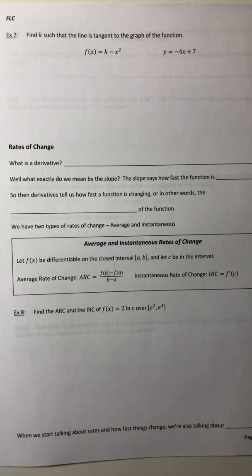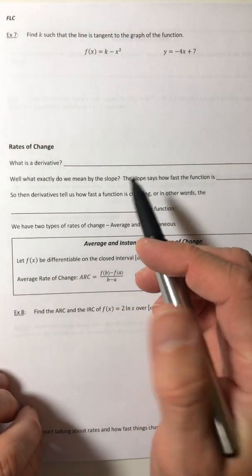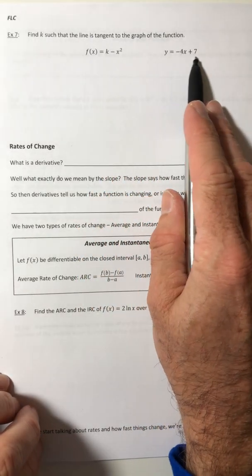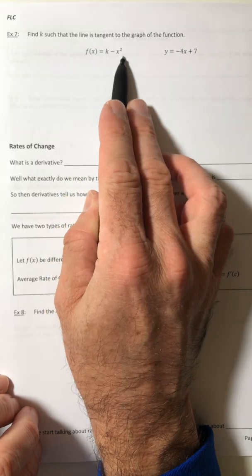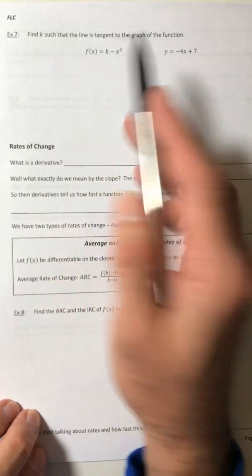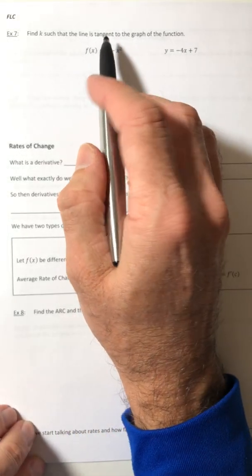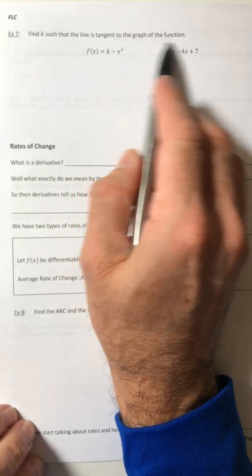Okay, let's pick up where we left off. So in this example, we're going to find k such that the line is tangent to the graph of the function. So here's our function f(x) = x² - y, and this is our line y = -4x + 7. So we want to make sure that this line is tangent to this curve, so we've got to figure out what value of k is actually going to do that.